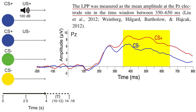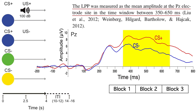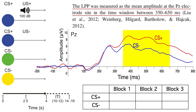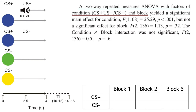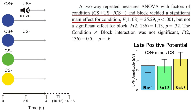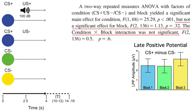Felix was interested in how the emotional response to the stimuli developed over the course of the conditioning procedure, so he broke the data into three blocks of trials. Each block had 16 CS plus trials and 16 CS minus trials. This yielded a 2 by 3 factorial design, where each subject had an LPP amplitude value in each of the six cells. Felix then entered the data into a two-way ANOVA with factors of CS plus/CS minus condition and block. The larger LPP amplitude for the CS plus than for the CS minus led to a significant main effect of condition. Things were pretty stable over blocks, so there was no significant main effect of block or condition by block interaction.